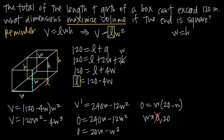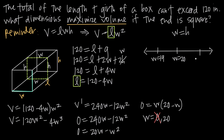To prove it, we use the first derivative test. We sketch a number line, plot our potential critical point w = 20 in the middle, then pick values on either side: w = 19 and w = 21. These are the values we'll test in the first derivative V′. I always remind myself to note which function I'm plugging into — the first derivative, V′.